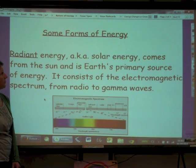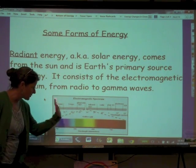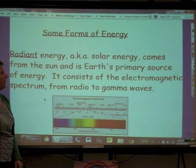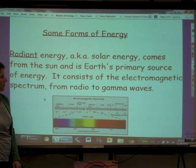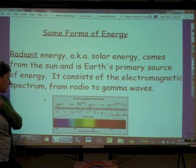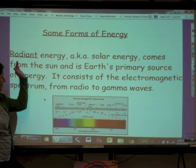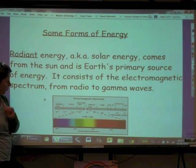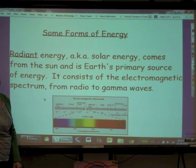Okay, so this radiant energy, this entire spectrum of electromagnetic waves, is Earth's primary source of energy. So electromagnetic waves, radiant energy. Okay, that's one form of energy.